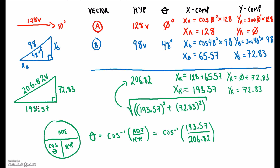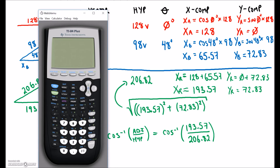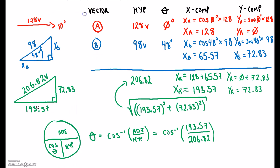Let's punch that into the calculator. I've got to do the inverse cos, so second function cos. Inverse cos of 193.57 divided by 206.82, closing my bracket to keep everything in line. Hit enter, and I'm looking for a value between 0 and 48. There's an angle of 20.62 — so that's a final angle of 20.62 degrees.